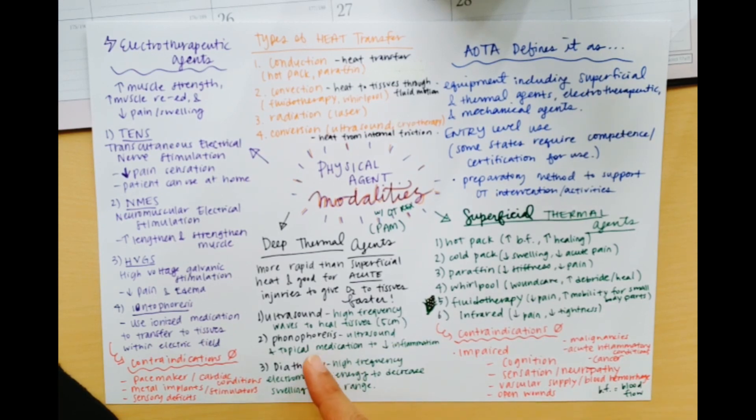And there's also phonophoresis. And this one is a combination of ultrasound. And what we do is we use a topical medication and mix it together to help decrease inflammation. So phonophoresis is cool because you get all the benefits of the ultrasound, but then you also get like a topical steroid or some kind of medication that's going to help relieve pain as well. The third one is diathermy. I'm unfamiliar with this one, but this one uses a high frequency electromagnetic energy to decrease swelling and increase range.